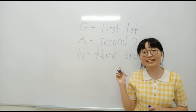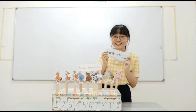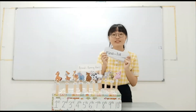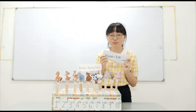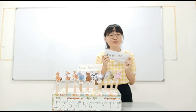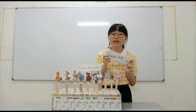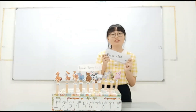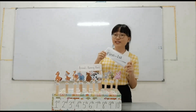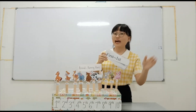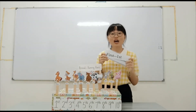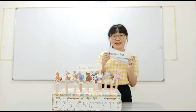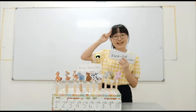Let's try this activity by ourselves. In summary, the ordinal numbers tell the positions of a particular object. The one who comes first will be given the position first. We have learned the ordinal numbers from 1st to 10th. Do you have any questions? Hope you enjoyed the learning for today. See you next time!